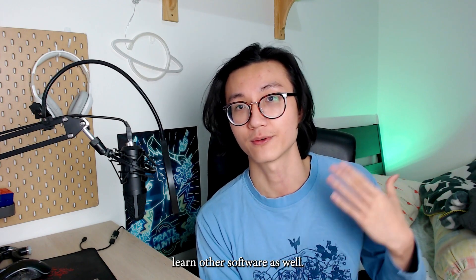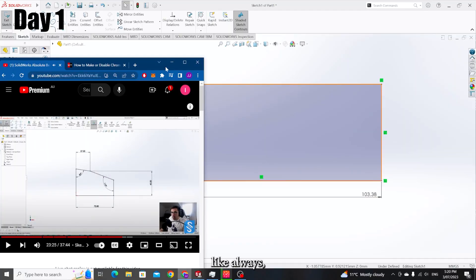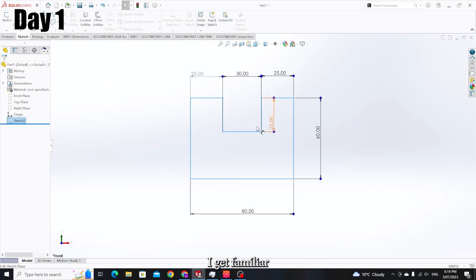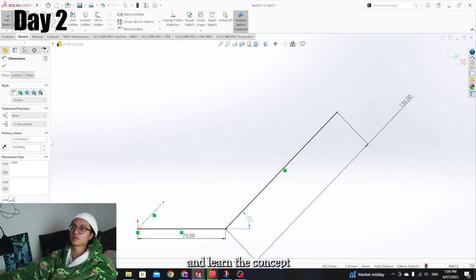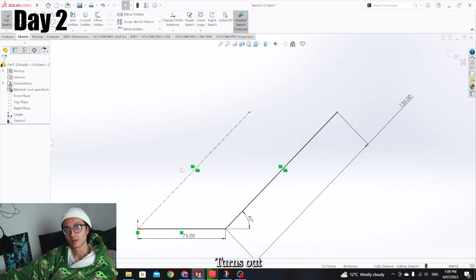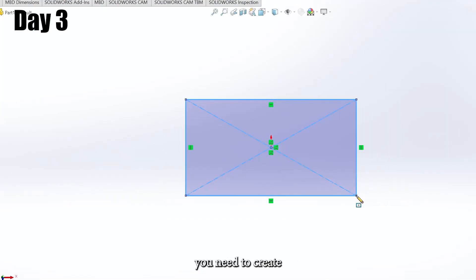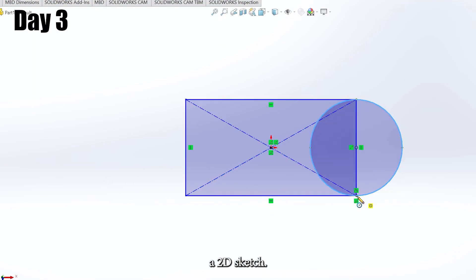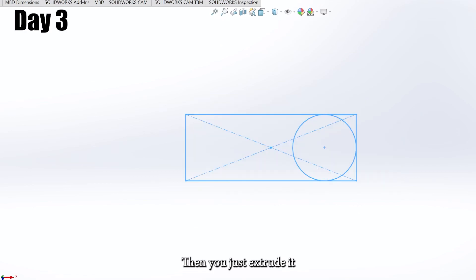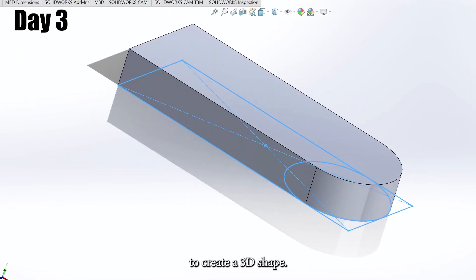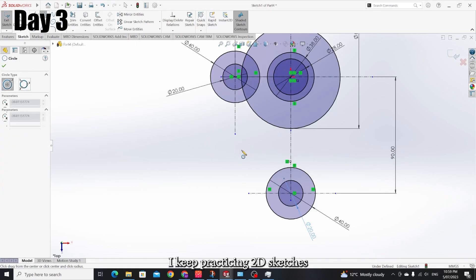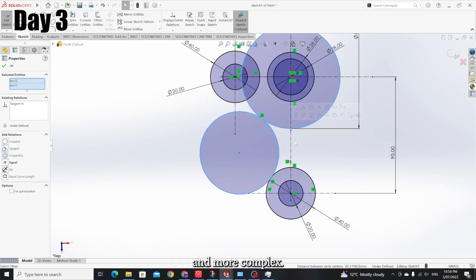Day 1, like always, we start with simple shapes and work our way up. This is also the time where I get familiar with the software and learn the concept of creating 3D shapes in CAD. Turns out it is actually really simple. First, you need to create a 2D sketch. After that, you give each line some measurements. Then you just extrude it to create a 3D shape. So for the first 2 days, I keep practicing 2D sketches and make it more and more complex.